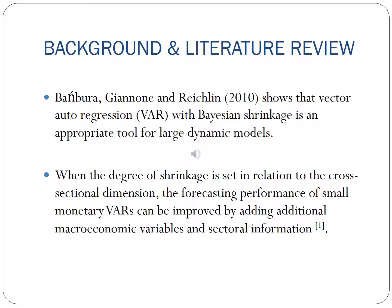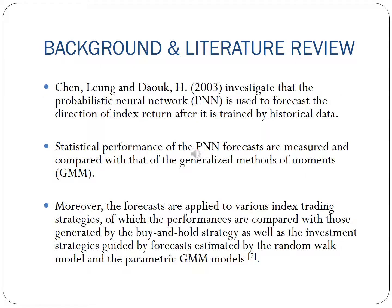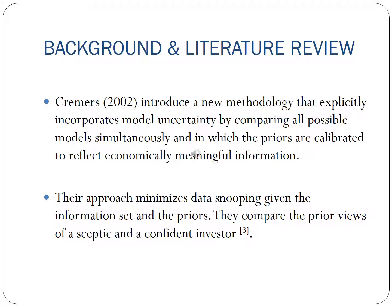Banbura, Giannone, and Reichlin (2010) show that vector autoregression with Bayesian shrinkage is an appropriate tool for large dynamic models. Chen, Long, and Dock investigate that the probabilistic neural network is used to forecast the direction of index return after it is trained by historical data. Statistical performance of PNN forecasts are measured and compared with that of the generalized methods of moments. Cremers introduces a new methodology that explicitly incorporates model uncertainty by comparing all possible models simultaneously, in which the priors are calibrated to reflect economically meaningful information.